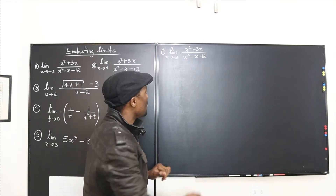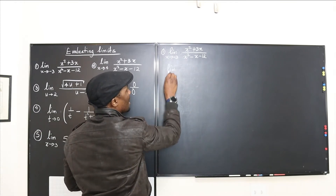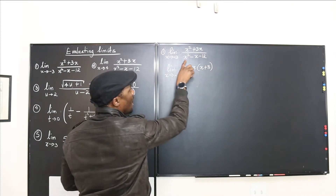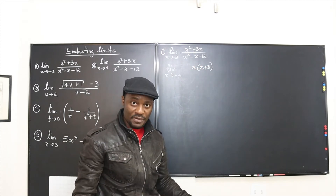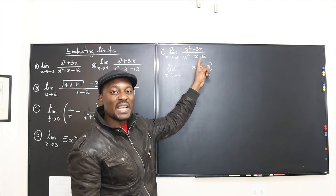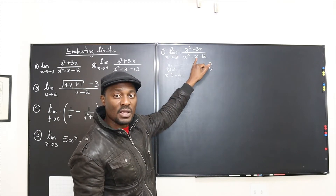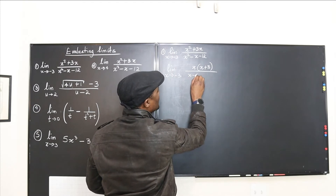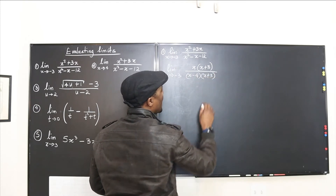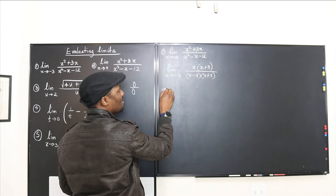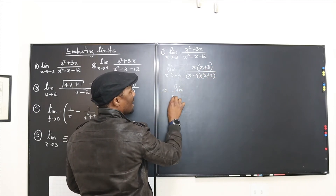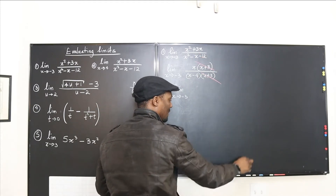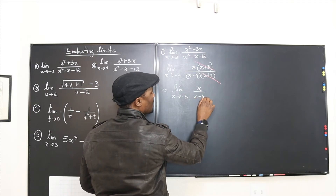Let's see if there's something we can factor out. If we factor, you rewrite the limit as x goes to negative three: the numerator factors as x times (x plus three). And if you know your factoring well, the denominator factors as (x minus four)(x plus three). So we can cancel (x plus three) from top and bottom, leaving x over (x minus four).